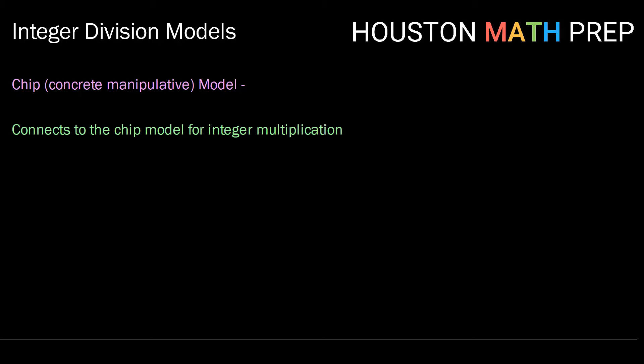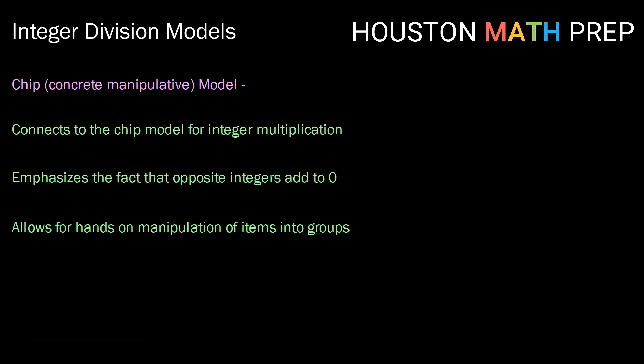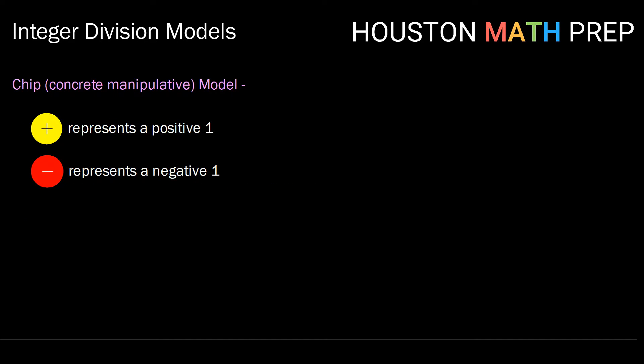The chip model connects nicely to the chip model for integer multiplication. There are going to be a lot of similarities. It also emphasizes the fact that opposite integers add to zero, and it allows for hands-on manipulation of items and moving them into groups. Once again, if you're using these little manipulative chips, we have our one positive and our one negative. An important thing to know is that if we combine one positive with one negative, they combine to be zero.